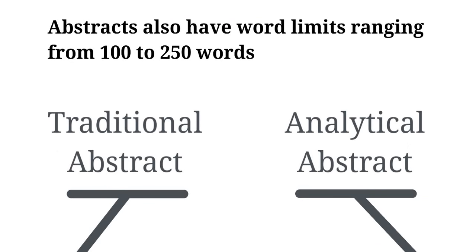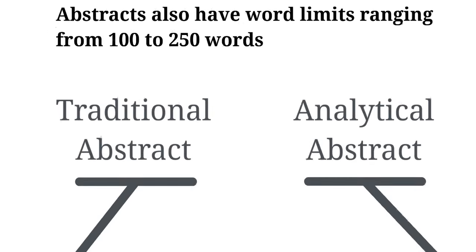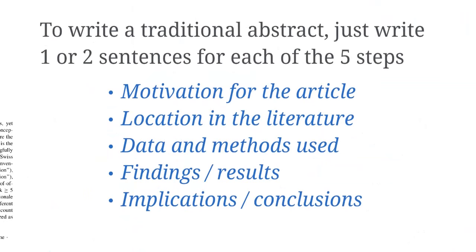This is a traditional abstract, where you're just asked, free form, to write a summary of your article. In order to get a handle on that, I suggest you think of your article in five parts: introduction, theory, methods, results, conclusion, and write one or two sentences for each of those five parts.